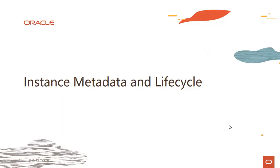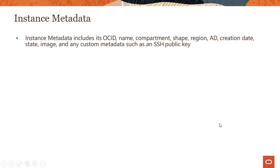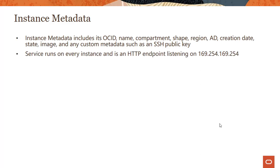Hi everyone. Welcome to this module on Instance Metadata and Lifecycle. Instance Metadata includes things like instance OSID — the unique identifier — name, compartment, shape, region, availability domain, and all the values you would attribute with the instance. You can also have custom metadata such as an SSH public key as part of Instance Metadata.